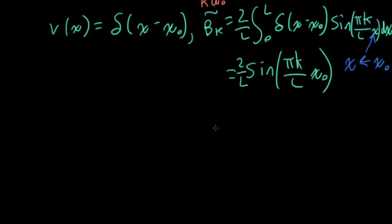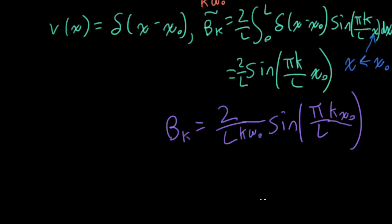And then my actual beta k, well, beta k is equal to 2 over l times sine pi over l k x naught. But it's going to also have this k omega naught sitting in the denominator.